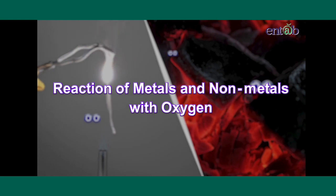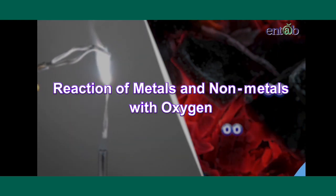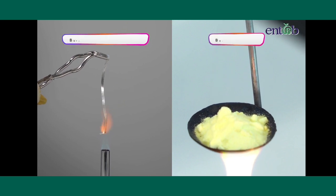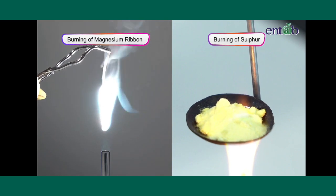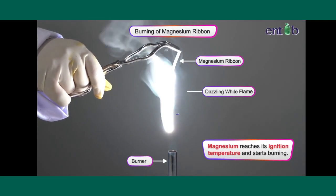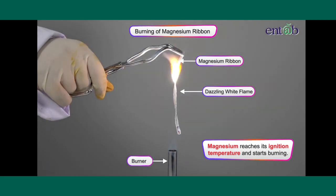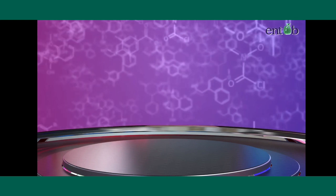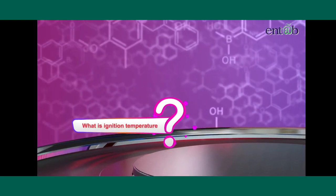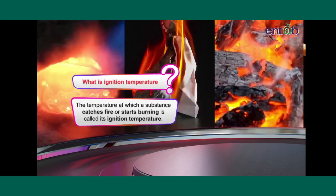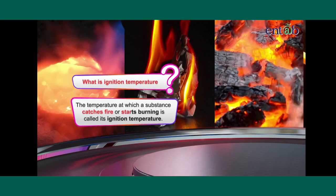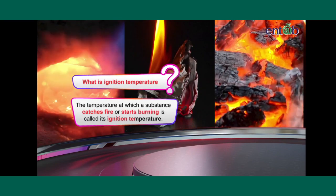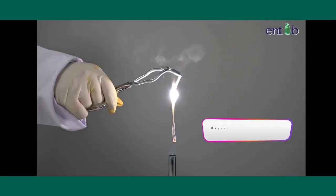Let's start with the reaction of metals and non-metals with oxygen. To begin with, let's recall the activity of burning magnesium ribbon and sulfur powder. Magnesium ribbon burns with a bright dazzling white flame. But before we proceed, let me ask you if you remember what ignition temperature is.